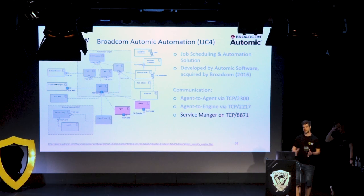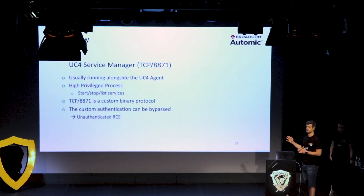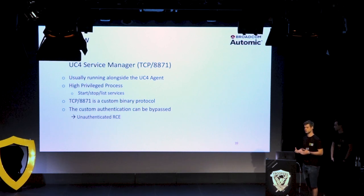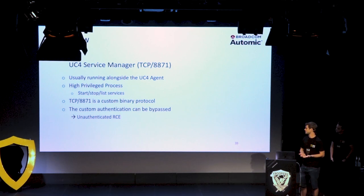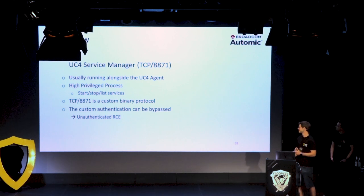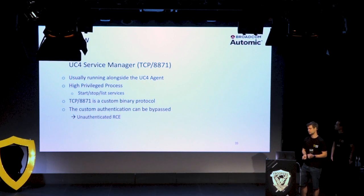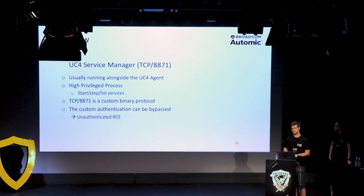The Service Manager was chronologically the first thing we looked at. It's a pretty old component, usually running alongside the UC4 agent on the same system. It starts the agent and has high privileges to start and stop services. It exposes a network port speaking a custom binary protocol with many problems. We focused on the custom authentication mechanism they implemented and found a way to bypass it — giving unauthenticated code execution as root, since this is a high-privilege process that can start processes.